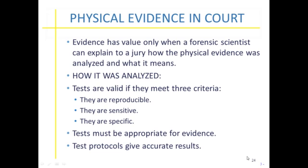The forensic scientist must relay things about the actual testing itself. They have to prove that the tests conducted on the pieces of evidence were actually valid — showing that the tests are reproducible, so if you run the same test on a piece of paint, you get the same results every time. They also have to prove that the tests are very sensitive and very specific, appropriate for the type of evidence being analyzed, and that the results are accurate.